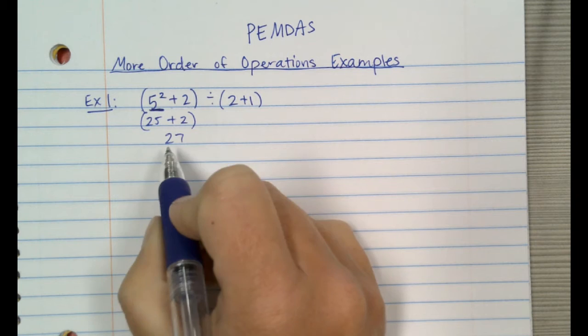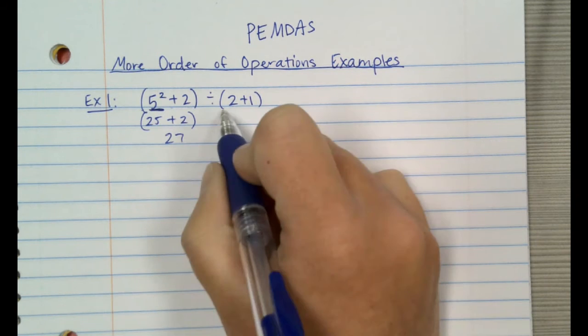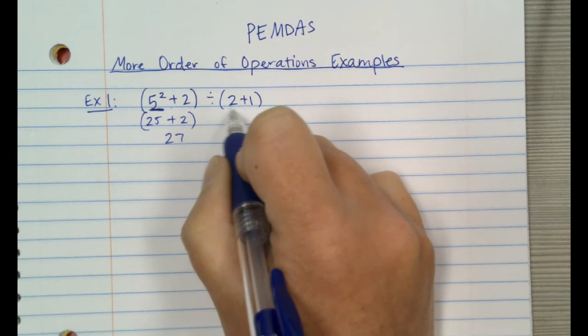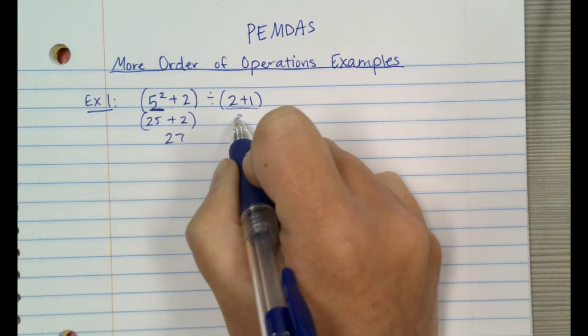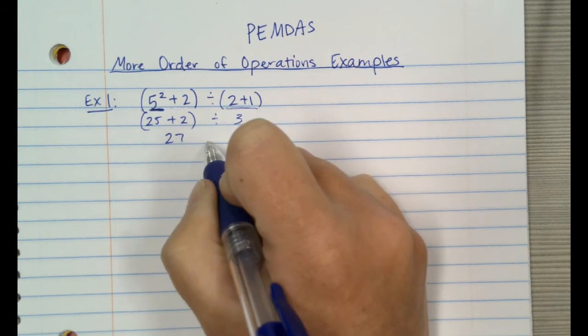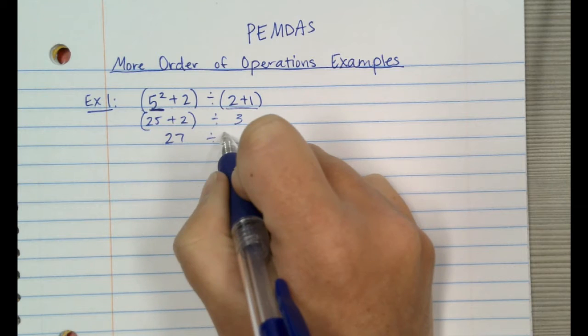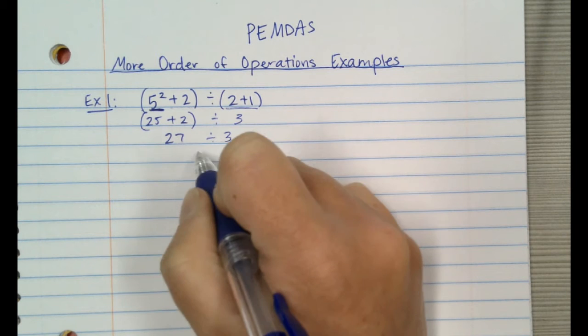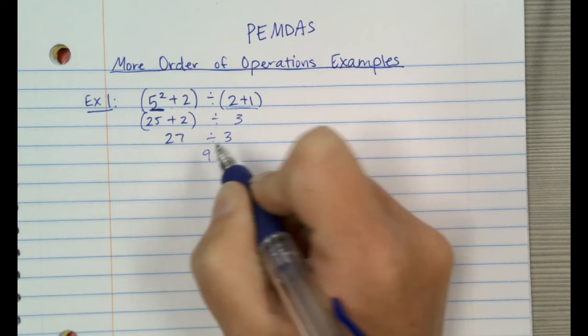Now that we don't have anything else to do in here, we don't need our parentheses anymore, so it's just 27. In the second set, all we have to do is 2 plus 1, which is 3. 27 divided by 3 gives you 9.